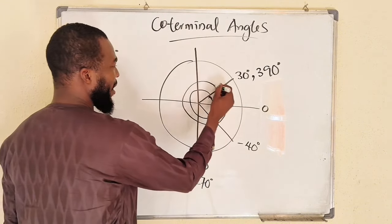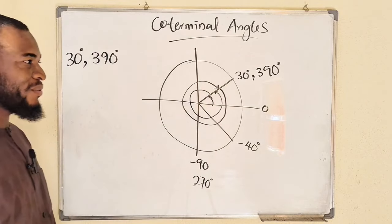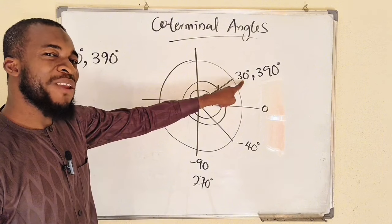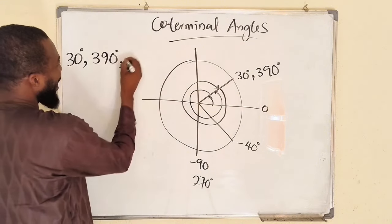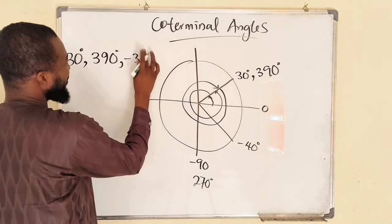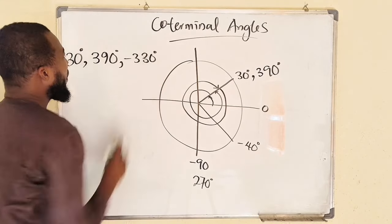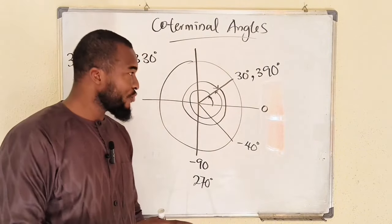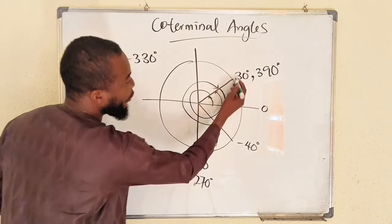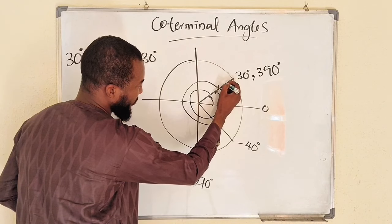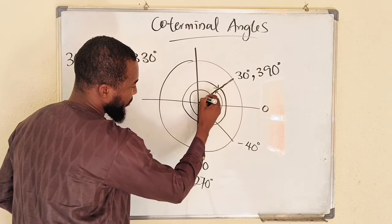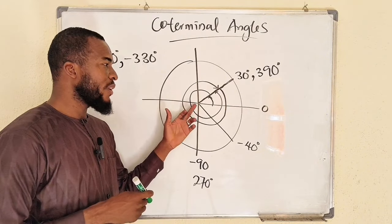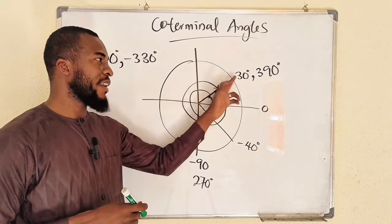If we decide to follow the negative direction, we subtract 360 degrees: 30 minus 360 is negative 330 degrees. So negative 330 degrees is another coterminal angle. We have infinitely many of them — the moment you add a complete rotation you get another coterminal angle. They all fall in the same position, on the same terminal ray.